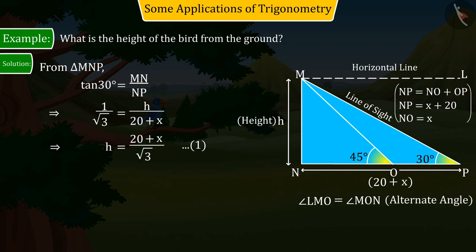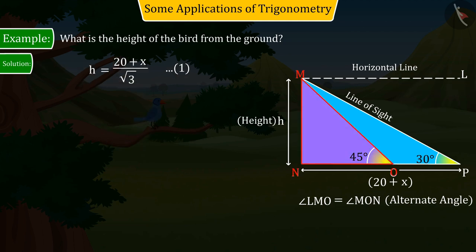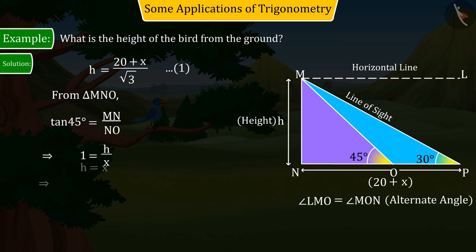Now, let's talk about triangle MNO. With the help of trigonometric ratios, we can see that the value of tan 45 degrees will be MN by NO. Where solving the equation with the help of the figure gives h equal to x, let us represent it as equation 2.